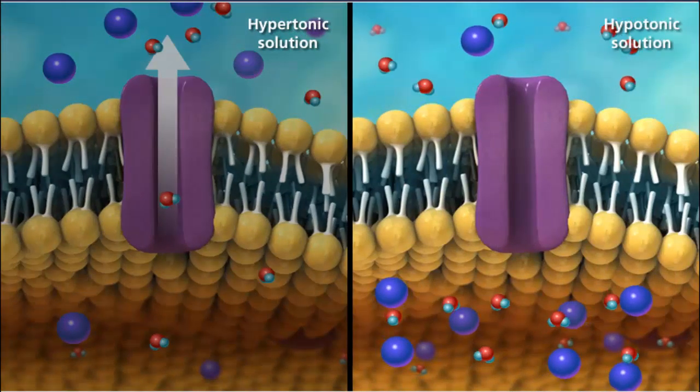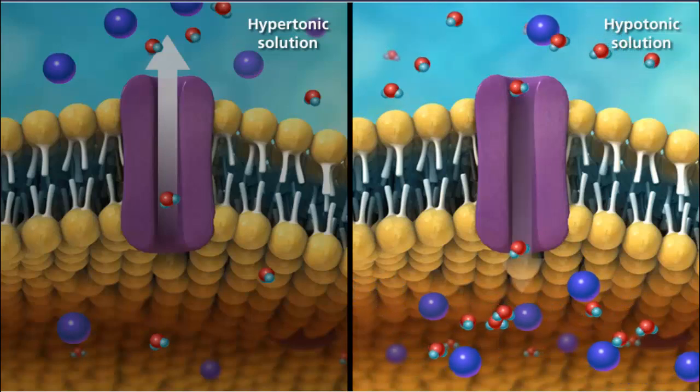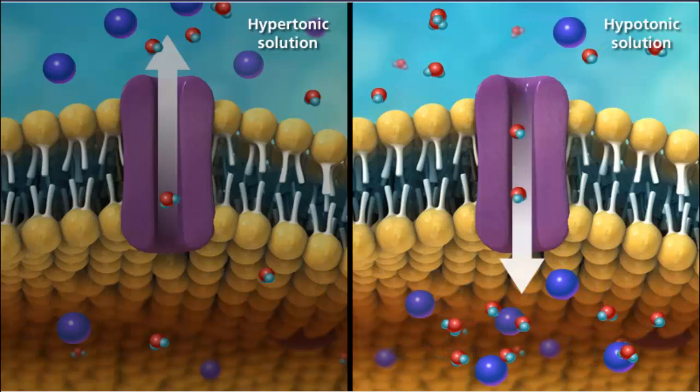In a hypotonic solution, the concentration of solutes is higher inside the cell than the outside environment, so water will diffuse into the cell.